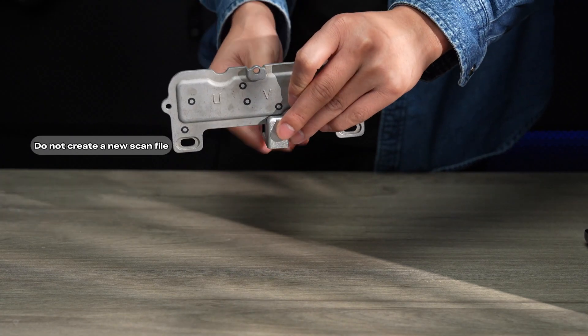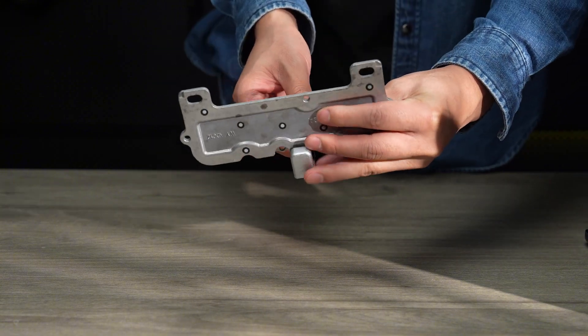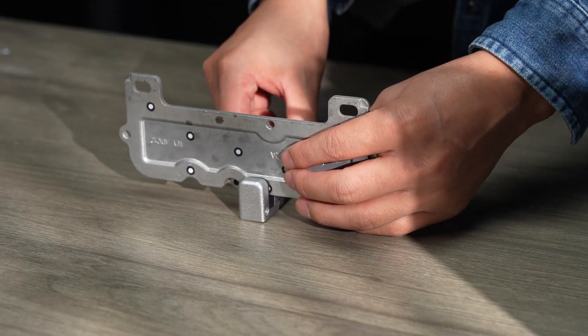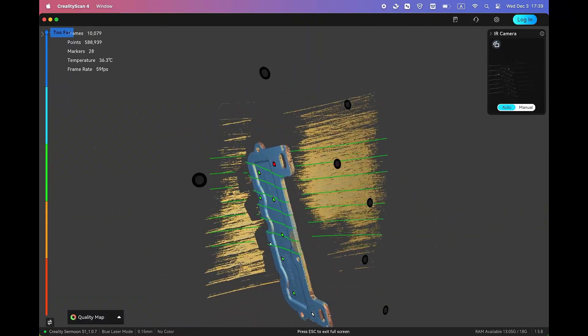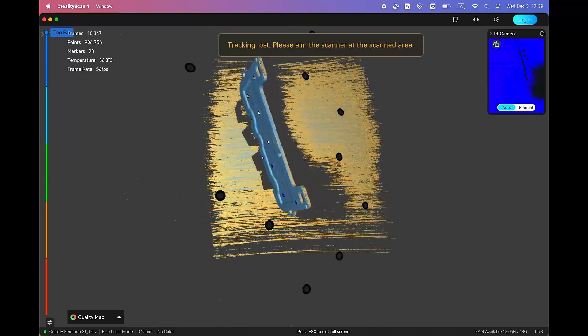Now comes the most important part. Flip the part upside down and scan the second position to capture the back side. Don't forget, this is all completed in the same scan file.